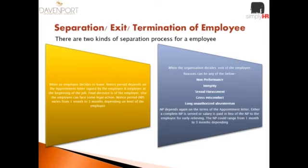In the case of termination, there are two kinds. One is voluntary resignation, where the person needs to serve the notice period. At a junior level, normally one month's notice is given; at a very senior level, three months' notice is generally practised. When the organization decides to exit an employee involuntarily, reasons could include non-performance, integrity issues, sexual harassment, gross misconduct, or long unauthorized absenteeism. All of this is mentioned in the appointment letter, so employees are fully aware that misconduct can lead to termination.